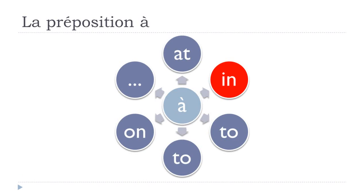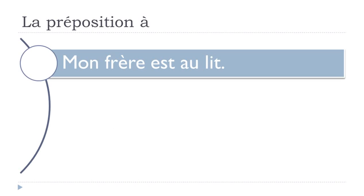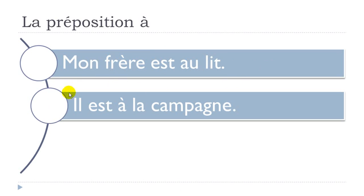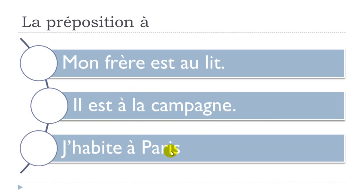The second category is the 'in' concept. First: Mon frère est au lit — my brother is in bed. 'Lit' is bed. Second example: Il est à la campagne — he is in the countryside. 'Campagne' means countryside. And the last one: if you want to introduce a town with 'habiter' (to live), J'habite à Paris — I live in Paris. Notice we don't put any article, just the name of the town.